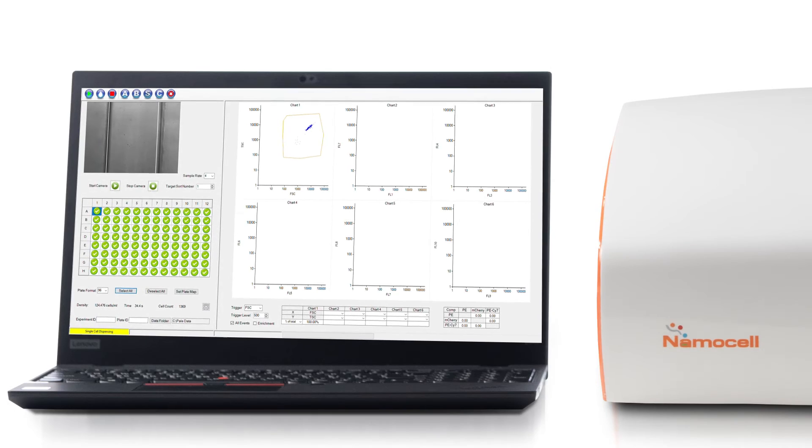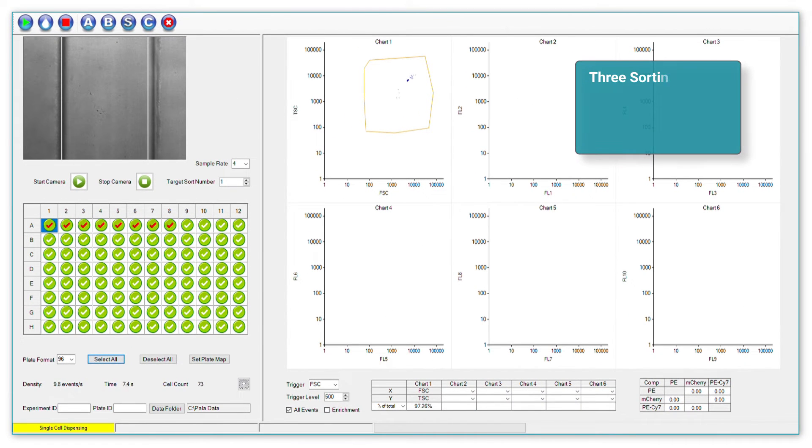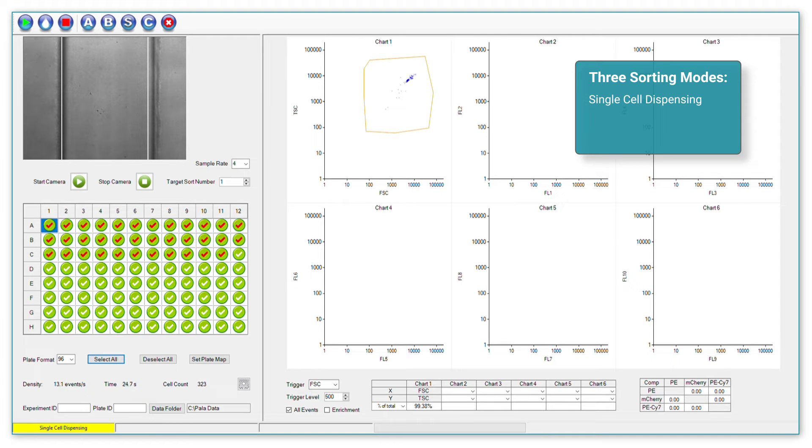Setting up the dispensing run is simple. First, select the mode according to your needs. The Single Cell Dispensing Mode dispenses one cell per well. The Target Cell Enrichment Mode isolates rare cells from extremely large samples. And the Bulk Cell Sorting Mode sorts tens of thousands of cells in bulk.